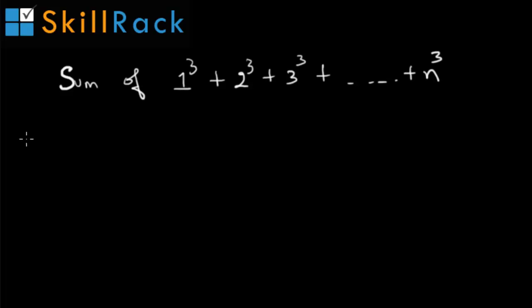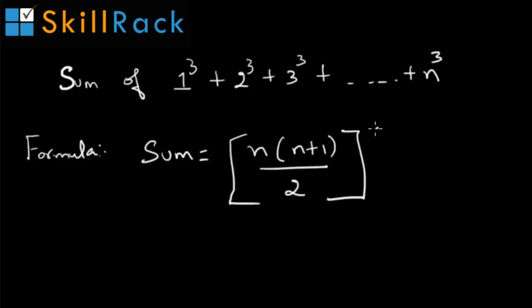It proceeds like this up to n cube. The formula is given as sum equals n into n plus 1 by 2 the whole square, where n is the maximum term in the series. That is the maximum number whose cube is present in the series.